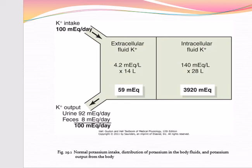A special difficulty in regulating extracellular potassium concentration is that more than 90% of total body potassium is contained in the cell. The intracellular potassium is much greater compared to the extracellular fluid potassium. In a 70 kg adult with about 28 litres of intracellular fluid — about 40% of body weight — and 14 litres of extracellular fluid, there are about 3,920 milliequivalent of potassium inside the cell and only about 59 milliequivalent in the extracellular fluids, which is about 4.2 milliequivalent per litre.